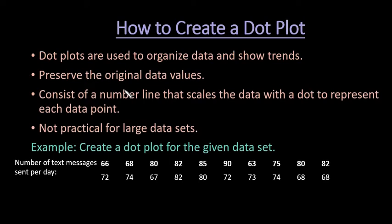Dot plots are a useful way to organize data, especially for small data sets, and it can help you to see the overall trends. A dot plot does preserve the original data values, and since it does that, it is not practical for large data sets. So if you have a large data set, it is not practical to create a dot plot because a dot plot puts a dot for every single data point over a number line.